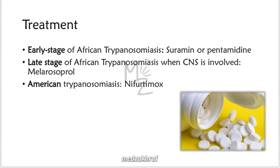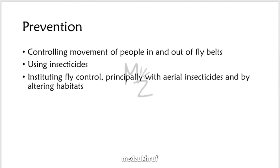Treatment. Early stages of African Trypanosomiasis are treated with suramin or pentamidine. Late stage, when the CNS is involved, is treated with melarsoprol. American Trypanosomiasis is treated with nifurtimox. Prevention includes controlling movement of people in and out of fly belts, using insecticides, and instituting fly control principally with aerial insecticides and by altering habitats.